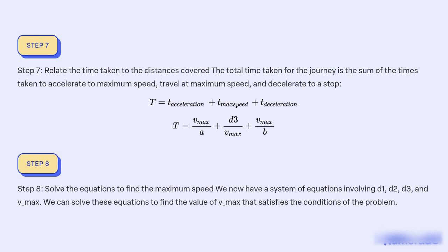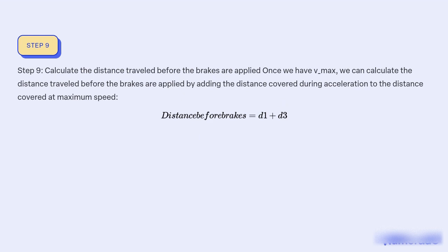Step 8: Solve the equations. To find the maximum speed, we now have a system of equations involving d1, d2, d3, and v_max. We can solve these equations to find the value of v_max that satisfies the conditions of the problem. Step 9: Calculate the distance travelled before the brakes are applied. Once we have v_max, we can calculate this distance by adding d1 and d3: Distance before brakes = d1 + d3.